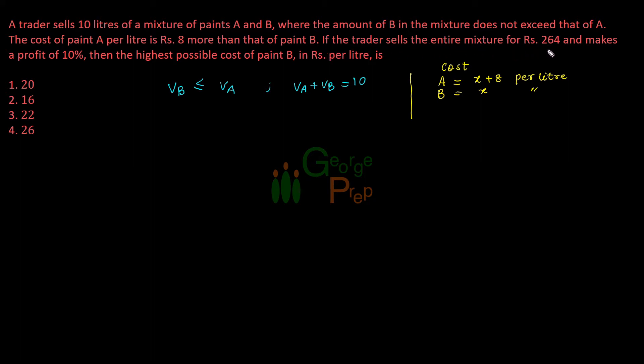If the trader sells the entire mixture for Rs. 264 and makes a profit of 10%, then we have to find X maximum, the highest possible cost of paint B per liter. The selling price of the entire mixture is 264. By selling it at Rs. 264, he has made a profit of 10%, so I can write it as CP plus 10% of CP, or 1.1 CP. That equals 264, which gives us cost price equal to 264 by 1.1. This comes to 240.